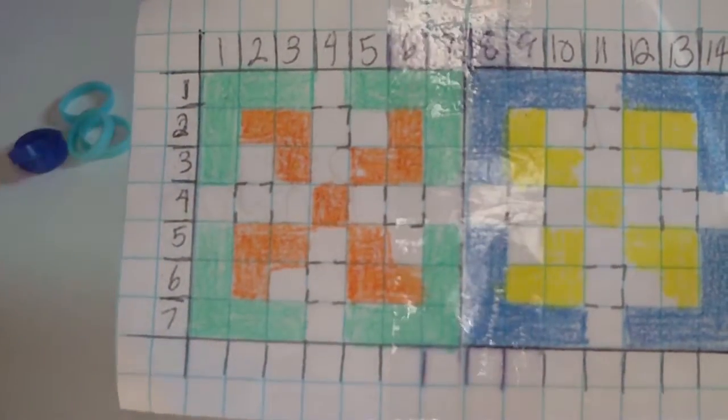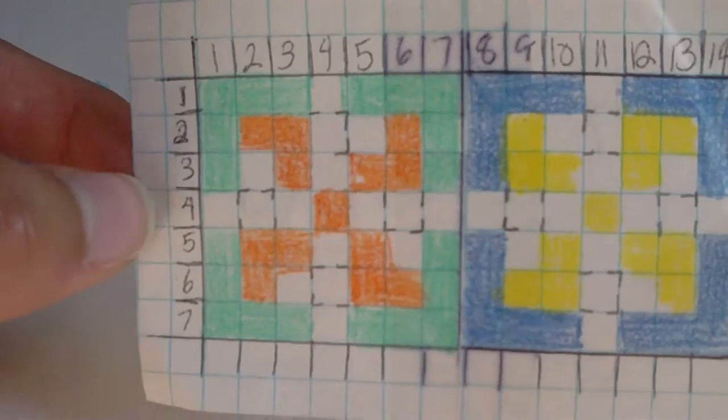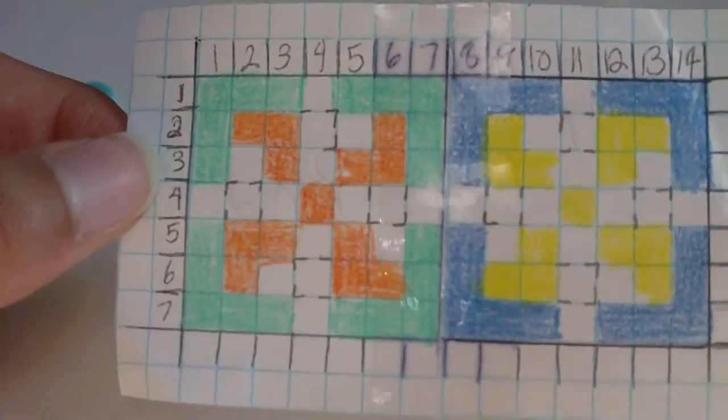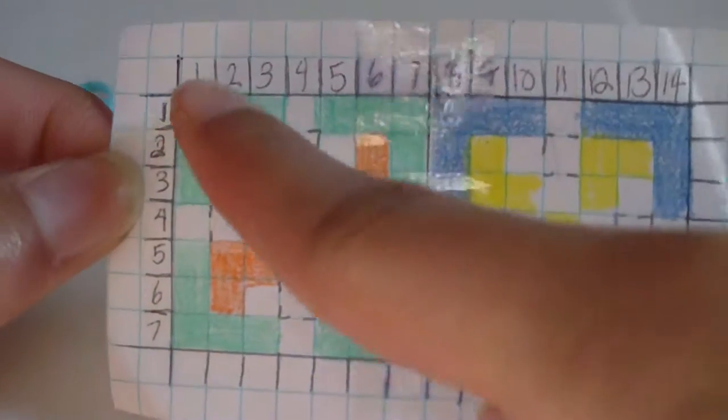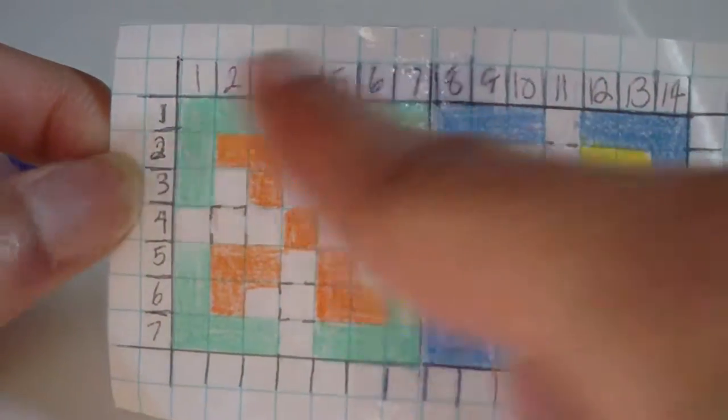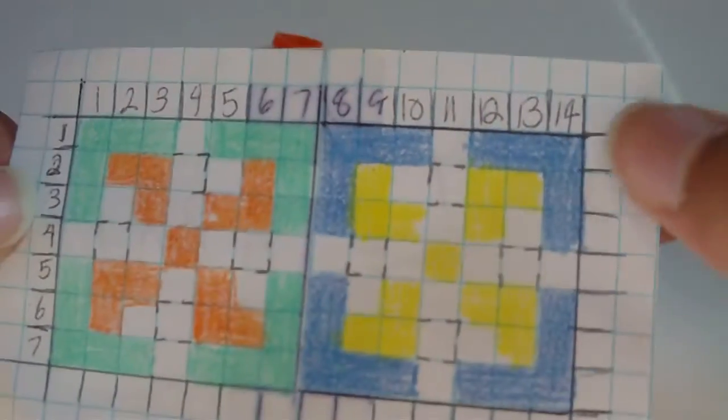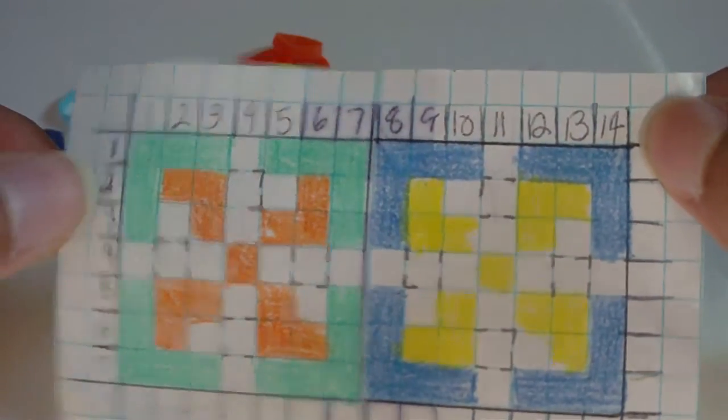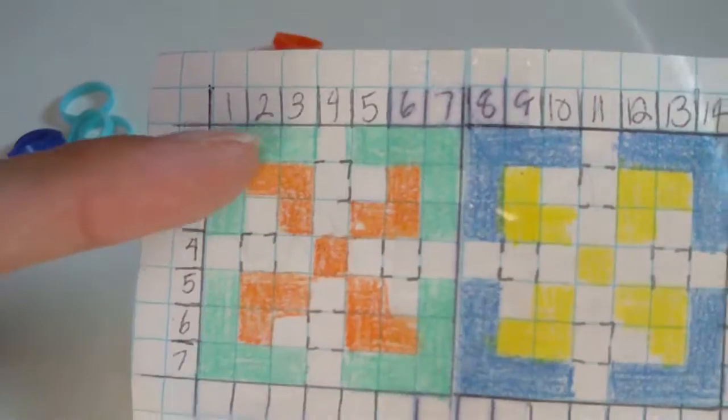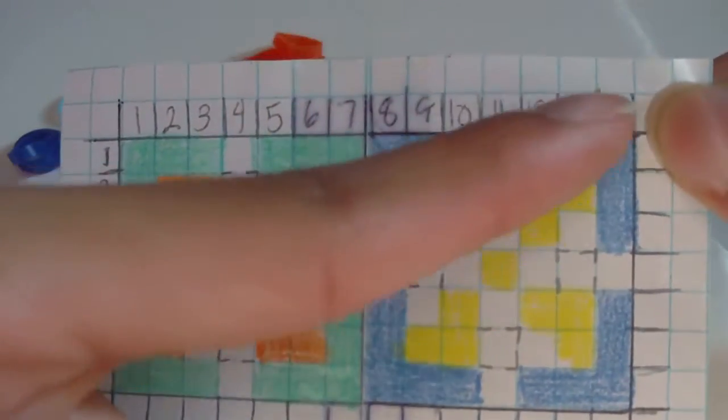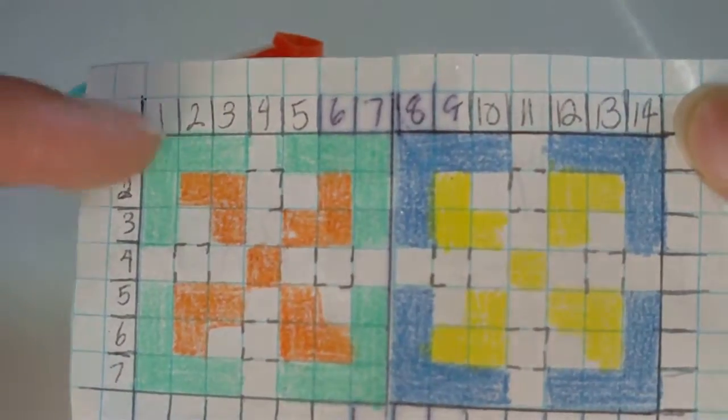And then you just go through the entire template, each column here at the top. And once you got to column 14, which is this last one here, you would start over, so go back to the beginning and place the bands the same way you did the first time.